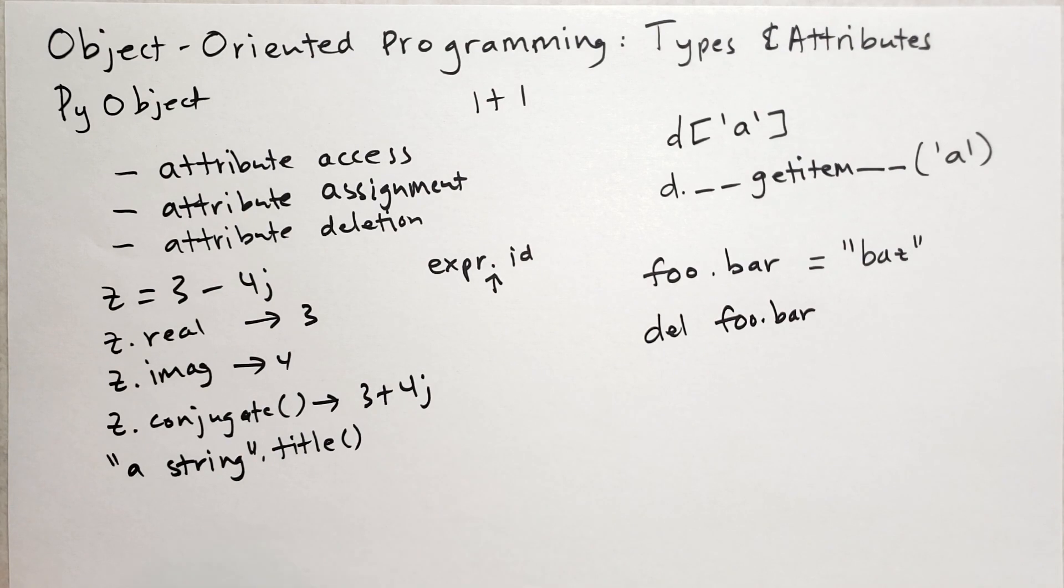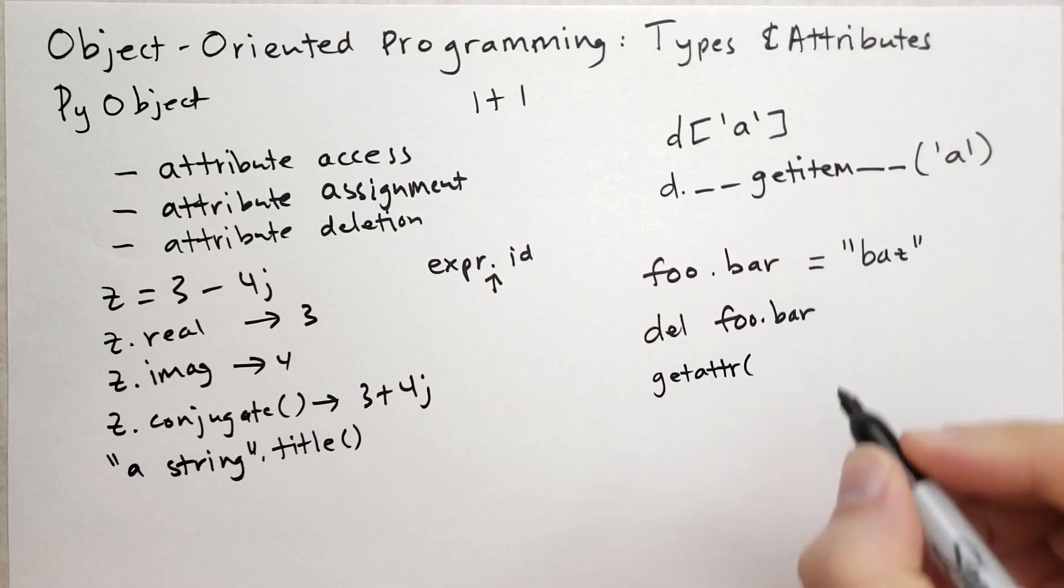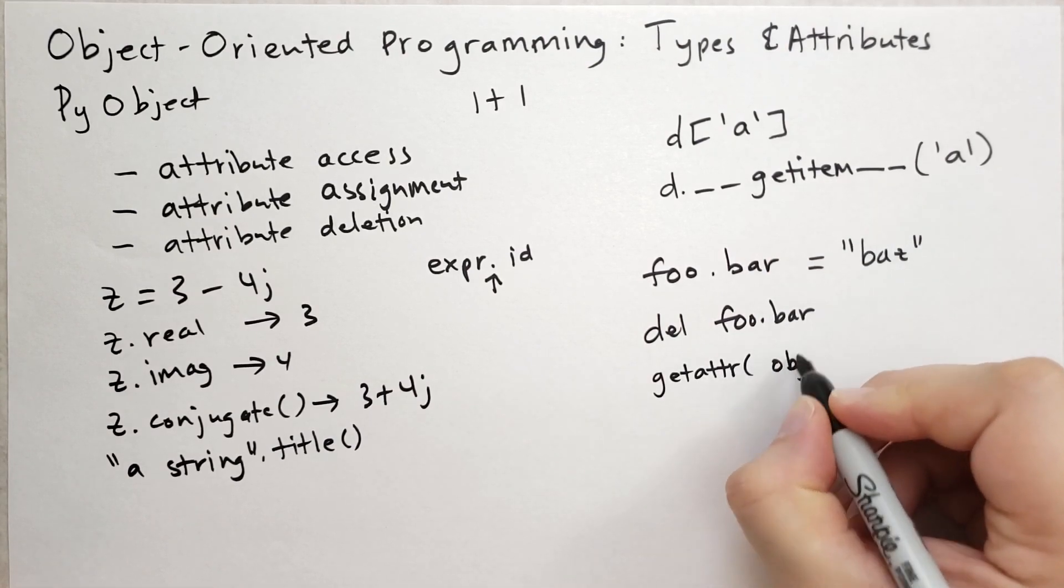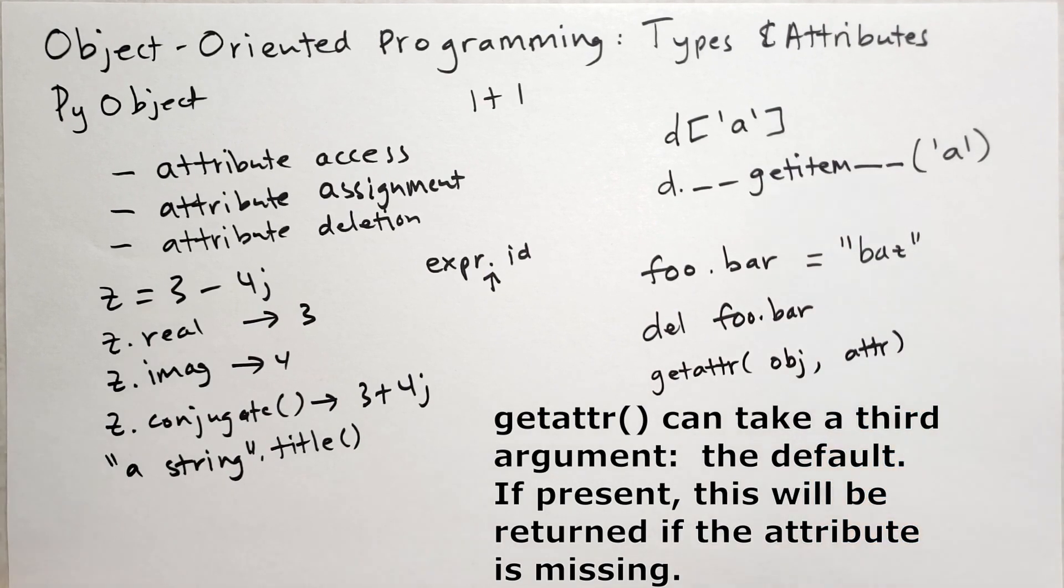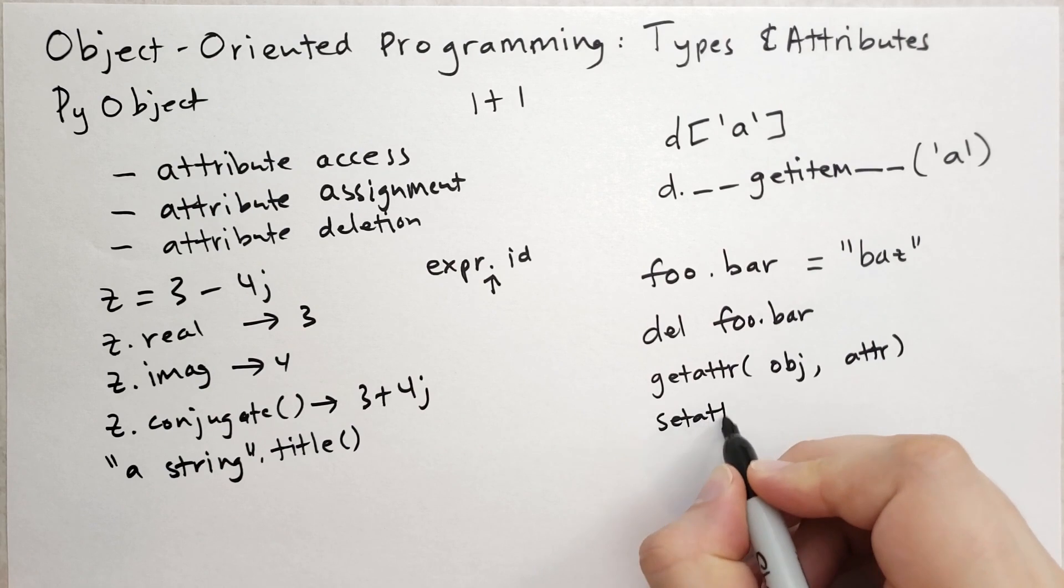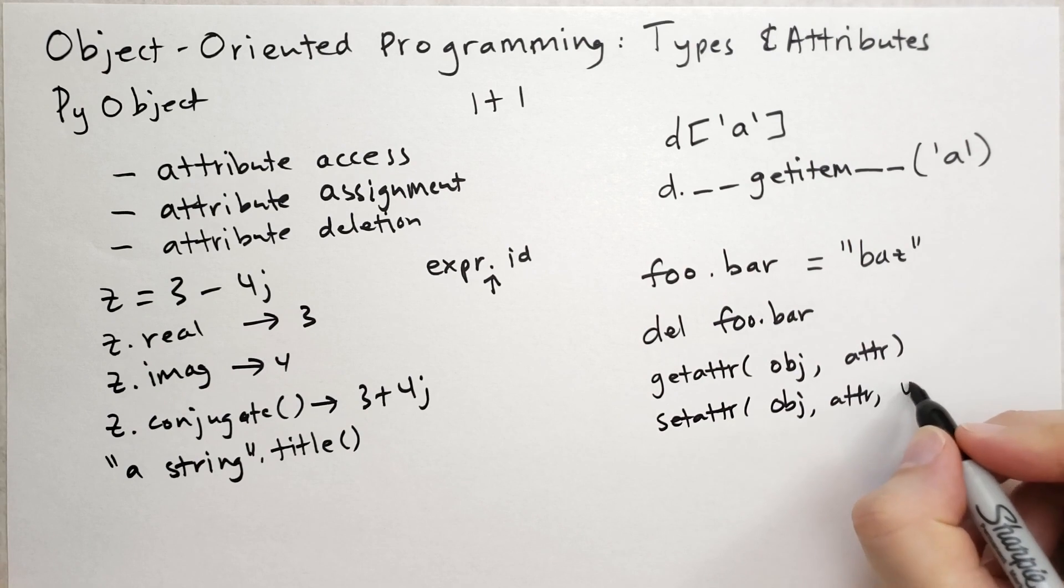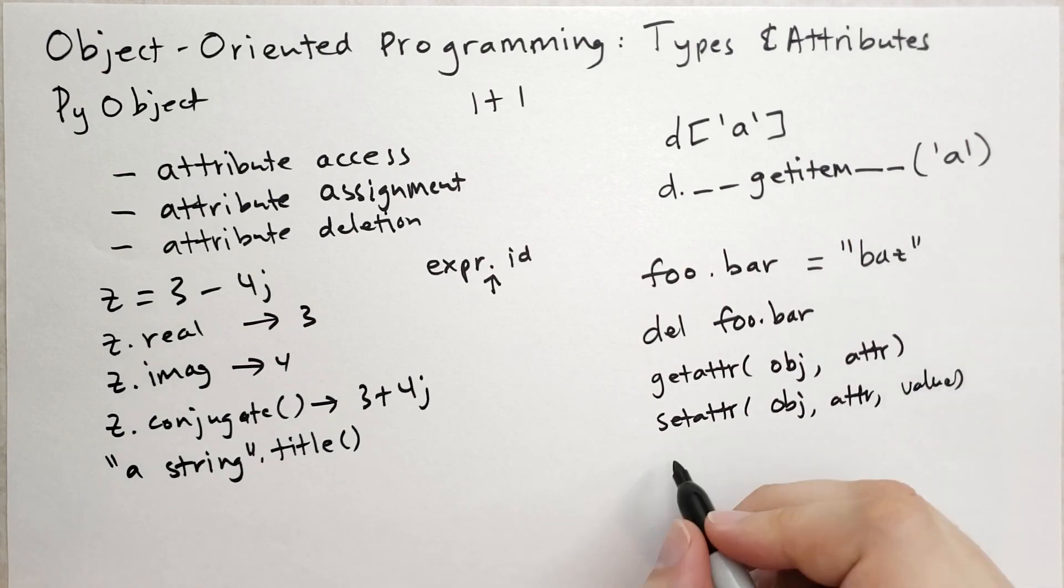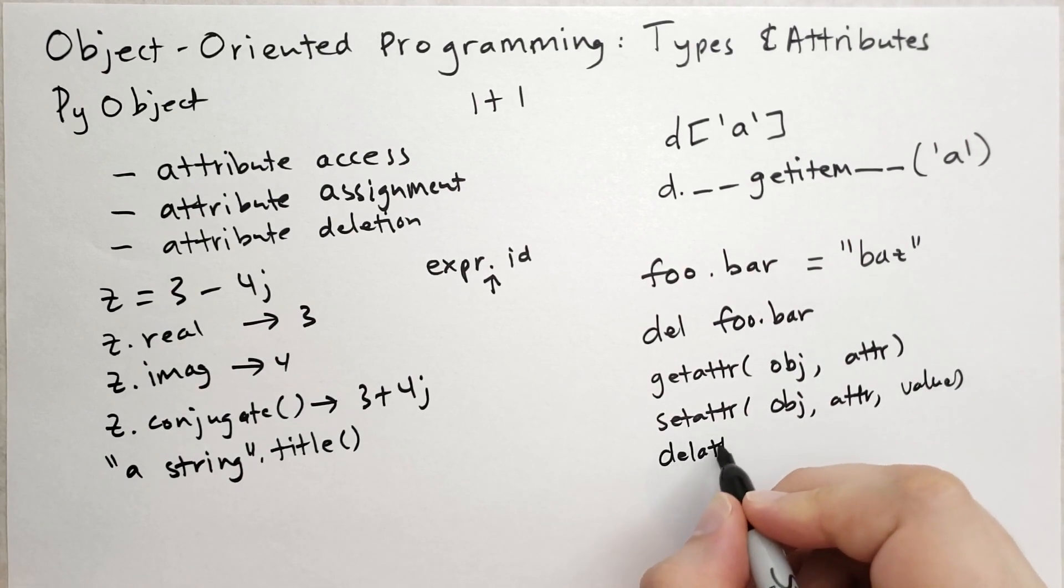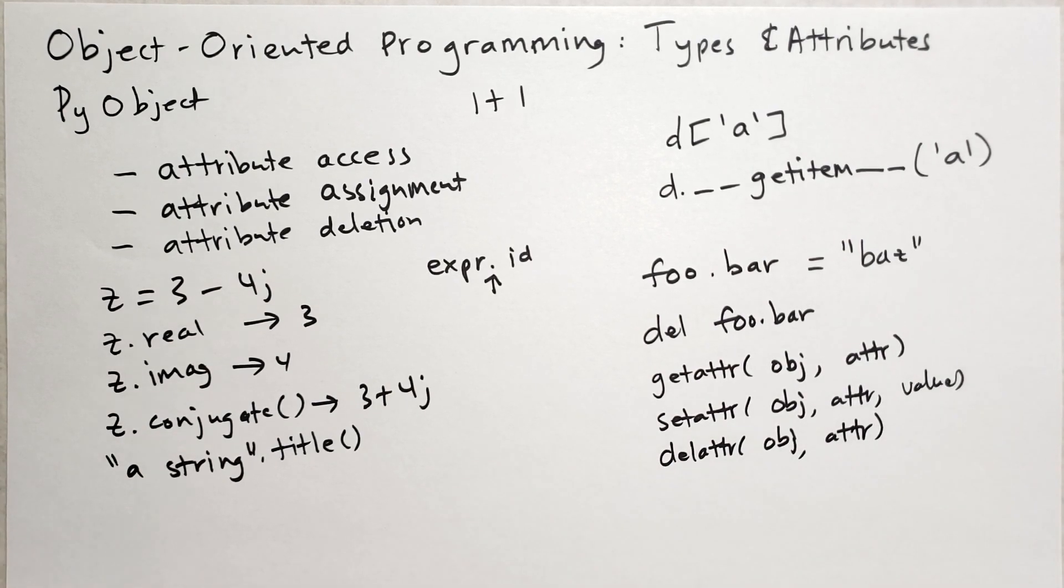Now there are some functions that Python provides. One is called getattr. And what you do is you provide the object and then you provide the attribute you want. And then there is setattr. The object, the attribute, and then the value that you want to set. And then there's delattr. The object and the attribute. And these methods, these functions, they do basically what we described above. So this is pretty useful.